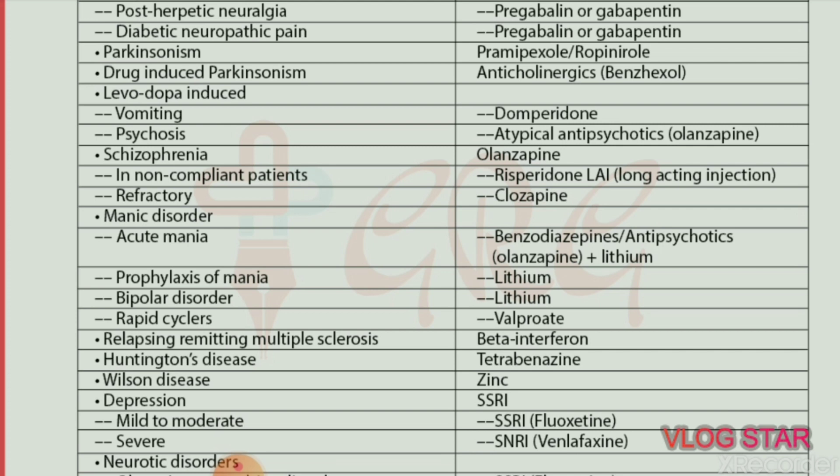For manic disorders — acute mania, drug of choice is benzodiazepines plus antipsychotics plus lithium. Prophylaxis of mania — drug of choice is lithium. Bipolar disorder — drug of choice is lithium. Rapid cyclers — drug of choice is valproate.